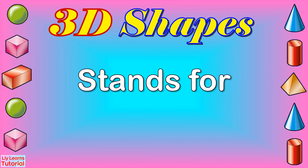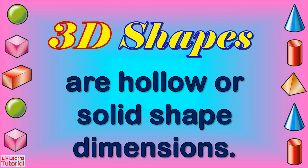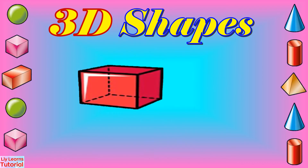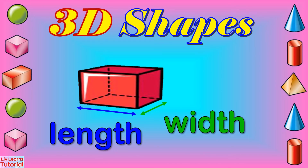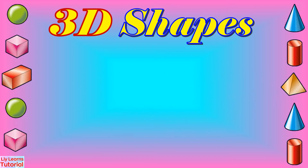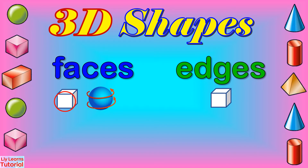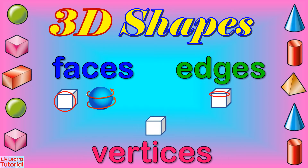3D shapes stands for three-dimensional. 3D shapes are hollow or solid-shaped dimensions that have length, width, and height. They are made up of faces, edges, and vertices.